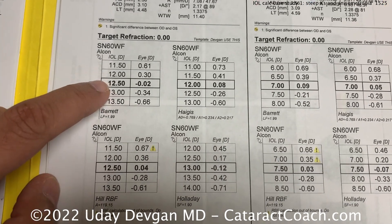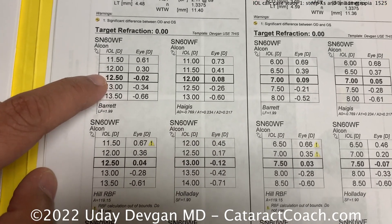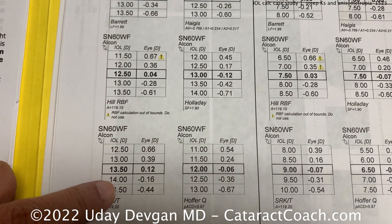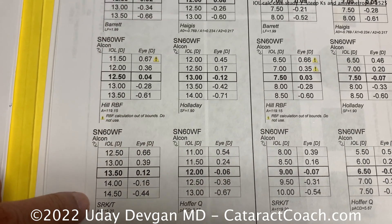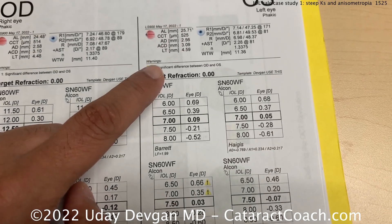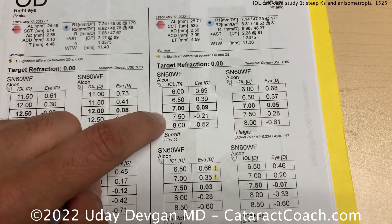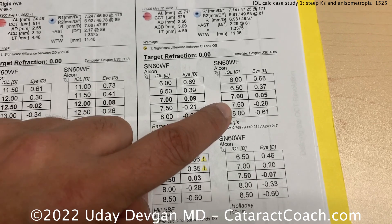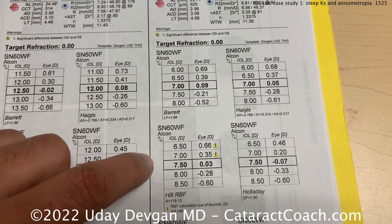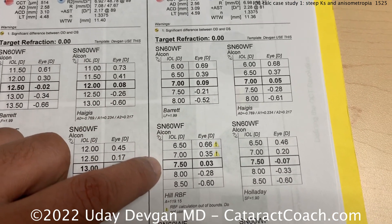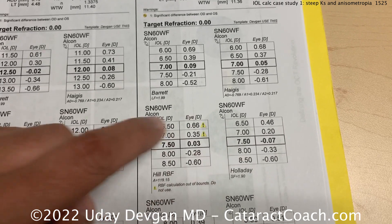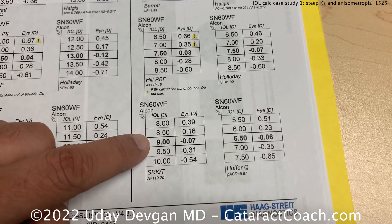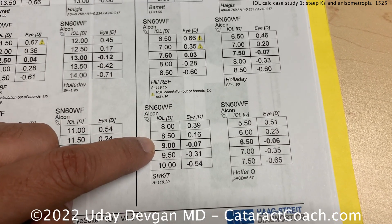Now I want you to look at the lens calcs for this eye — twelve and a half, twelve, twelve and a half. Why is SRKT so much higher? And look at this eye: Barrett says seven and a half, Haigis maybe seven to seven and a half, Hill seven and a half, Holladay seven and a half. Why is SRKT saying nine?